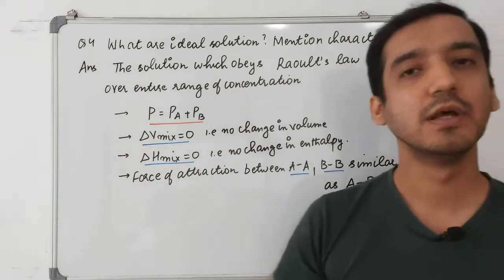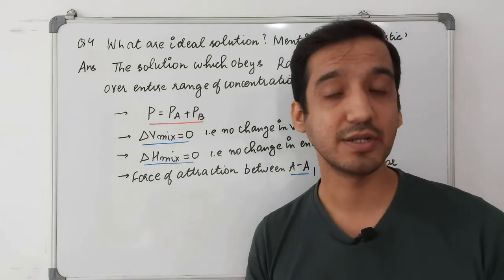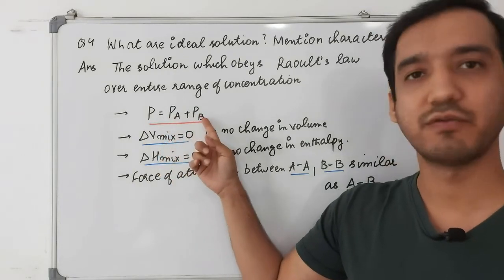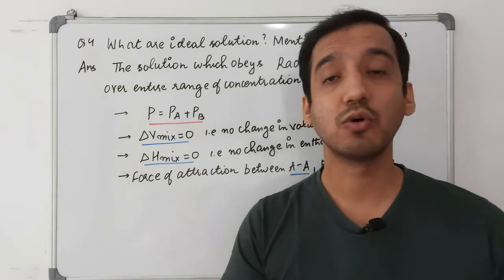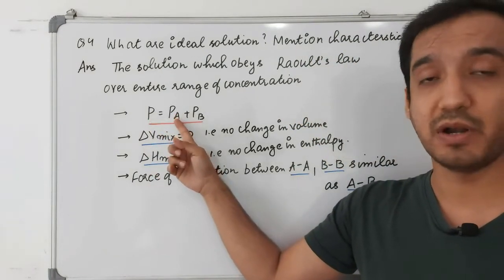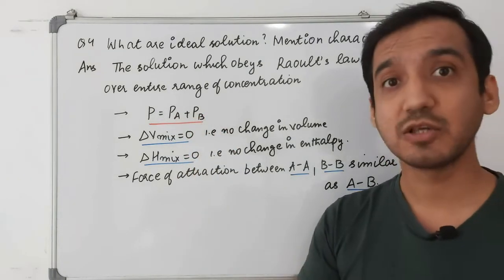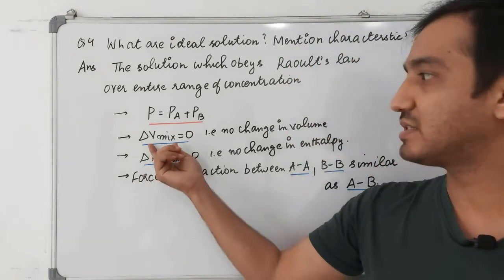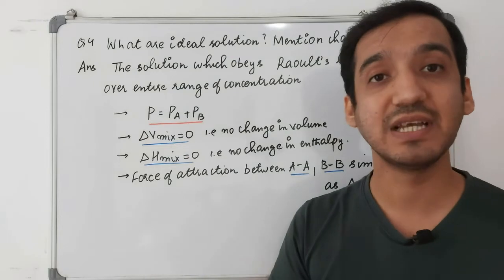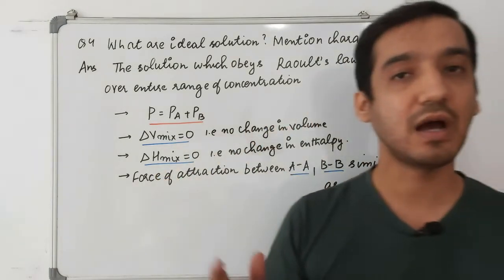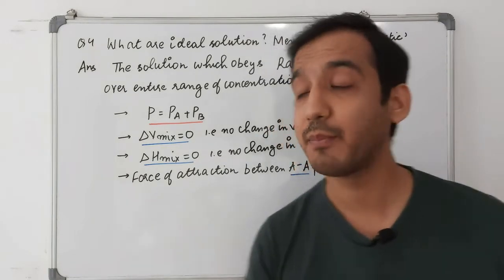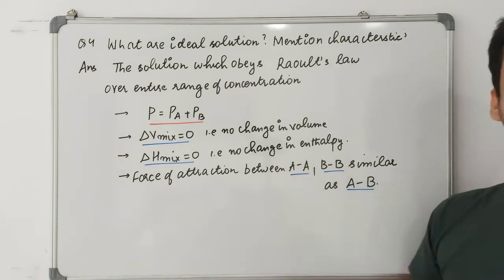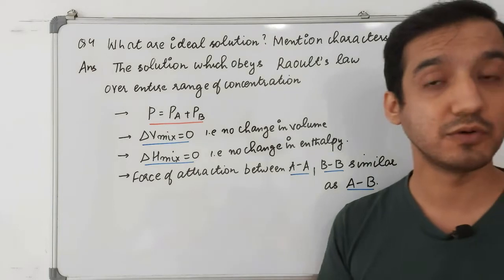Question 4: What are ideal solutions and their characteristics? An ideal solution is one which obeys Raoult's Law for the entire range of concentration. The total partial pressure equals the partial pressure of component one plus component two. After mixing, there is no change in volume (ΔV_mix = 0), no change in enthalpy, and the intermolecular force of attraction between A–A, B–B, and A–B are all equal.